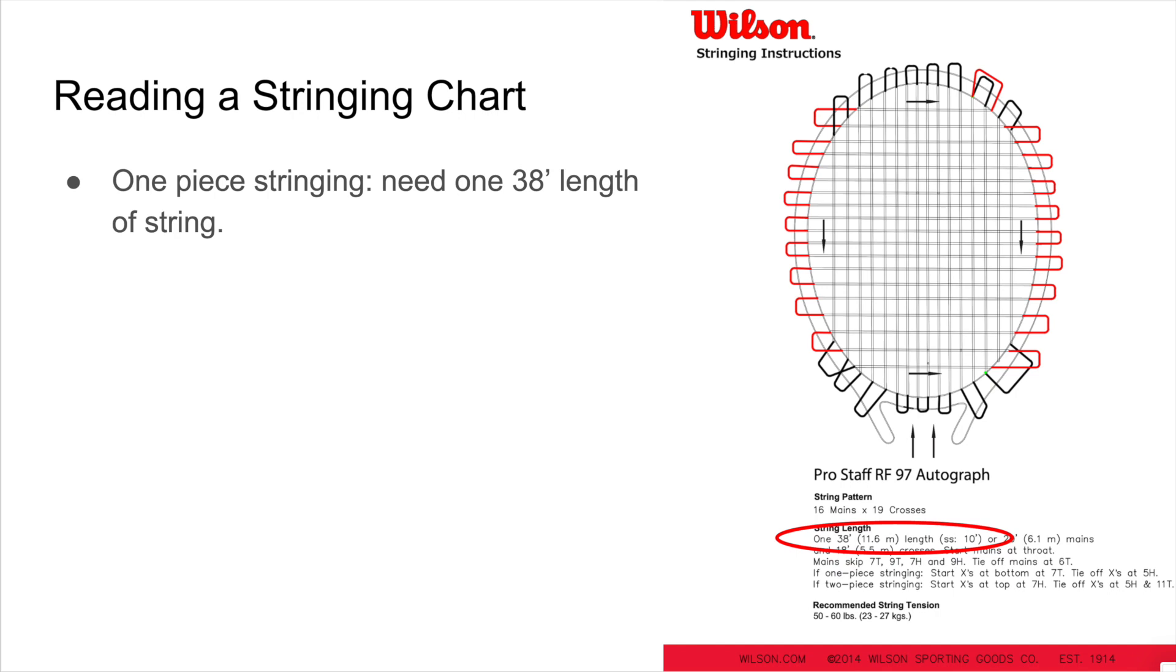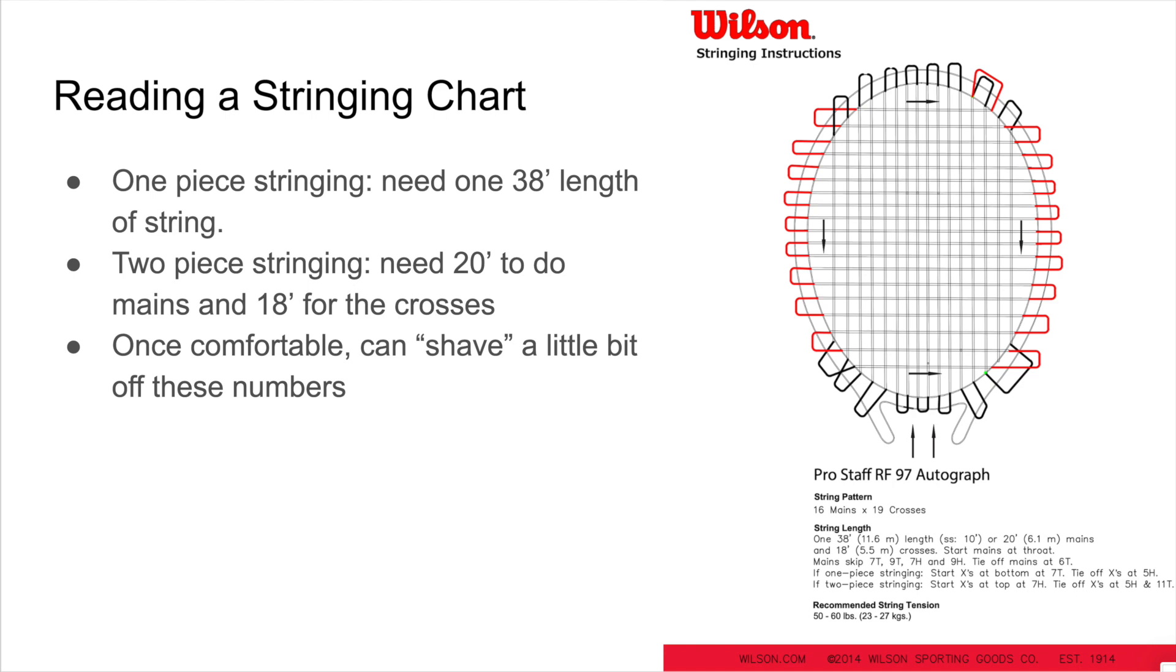Let's go to a stringing chart itself. This one is for the Wilson Pro Staff, one of my favorite rackets. The first thing you're going to see is whether or not you're going to do a one-piece or two-piece stringing. It is going to tell you the length of string that you need. So in this chart, you can see for one-piece stringing, you need a single 38-foot length of string. If you're going to do two-piece stringing, you need a 20-foot piece of string for the mains and an 18-foot piece of string for the crosses. I've found, honestly, that once you get comfortable stringing, you can probably shave a little bit off of these numbers, maybe as much as a foot on two-piece stringing for each. It is really going to come down to tying the knots at the end and how comfortable you are with that.